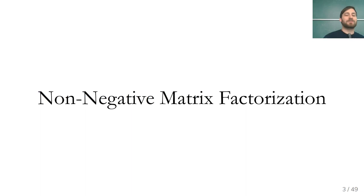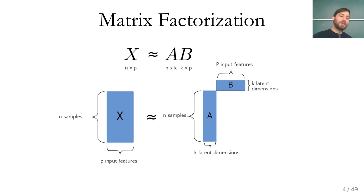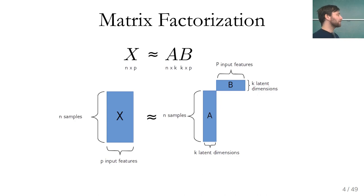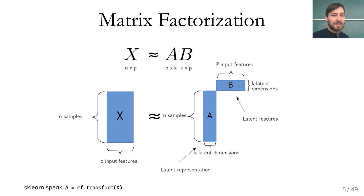Let's get started with non-negative matrix factorization. What is matrix factorization? You have your data matrix X, which is the number of samples times the number of input features, and you factorize it into a matrix product A and B, where A is samples times K and B is K times input features. K is thought of as latent dimensionality, so this is a way to extract or compress features. Matrix A is a new latent representation of your data, and B expresses patterns in your data.